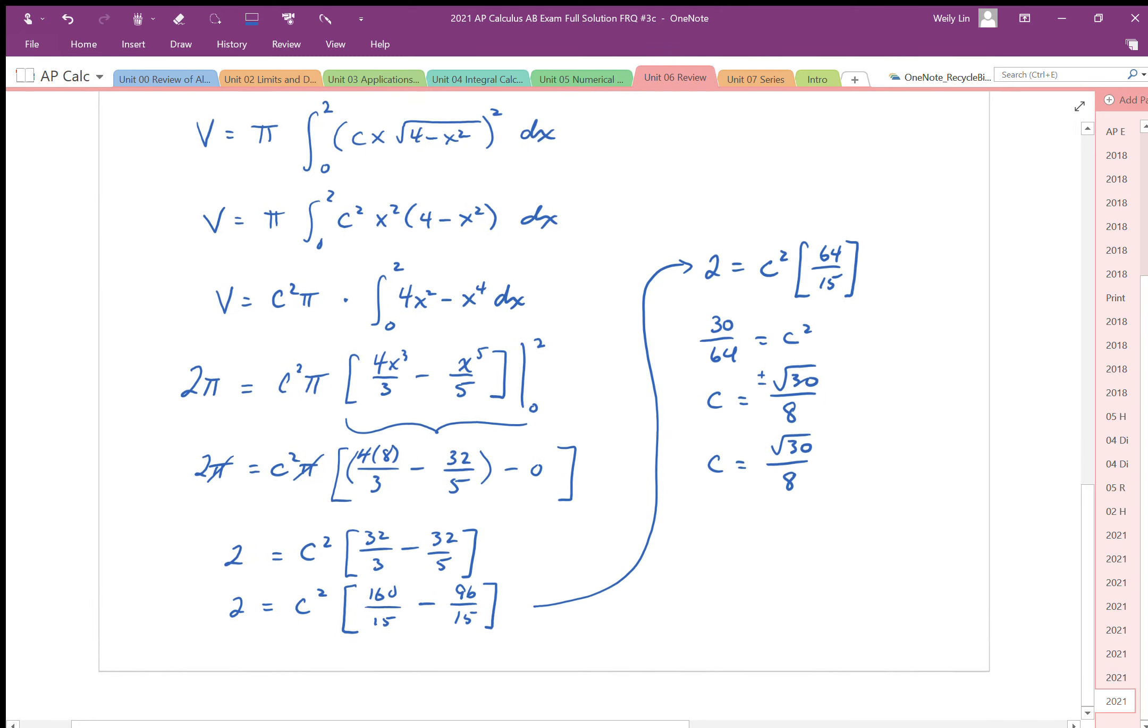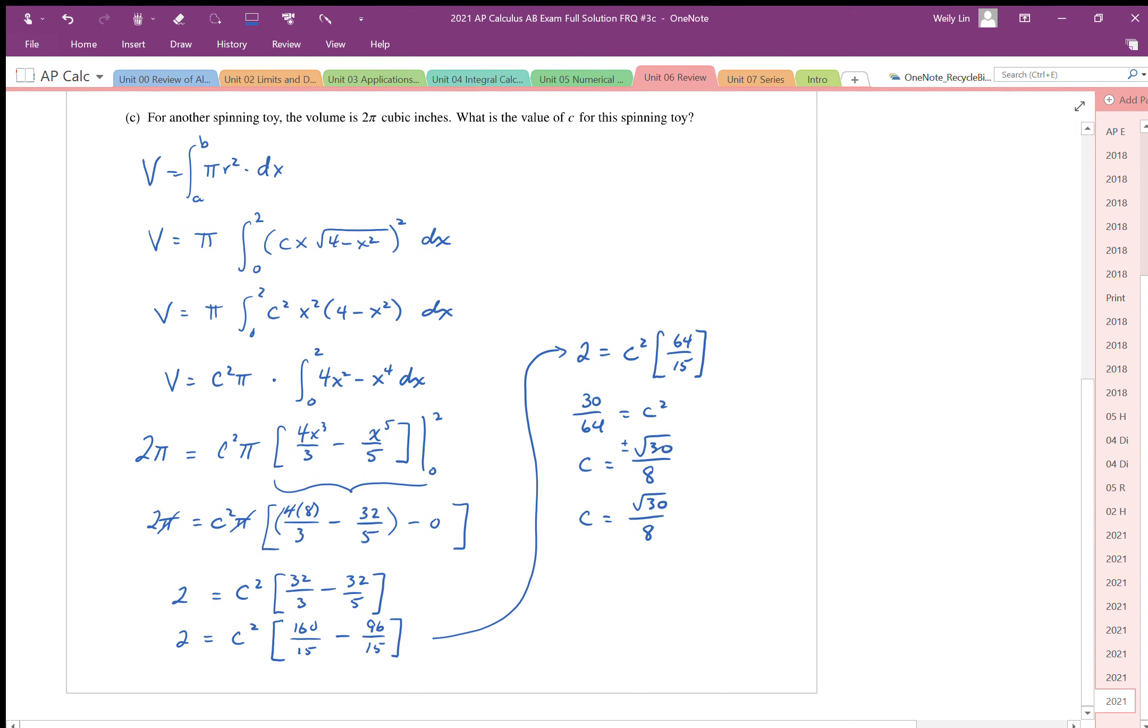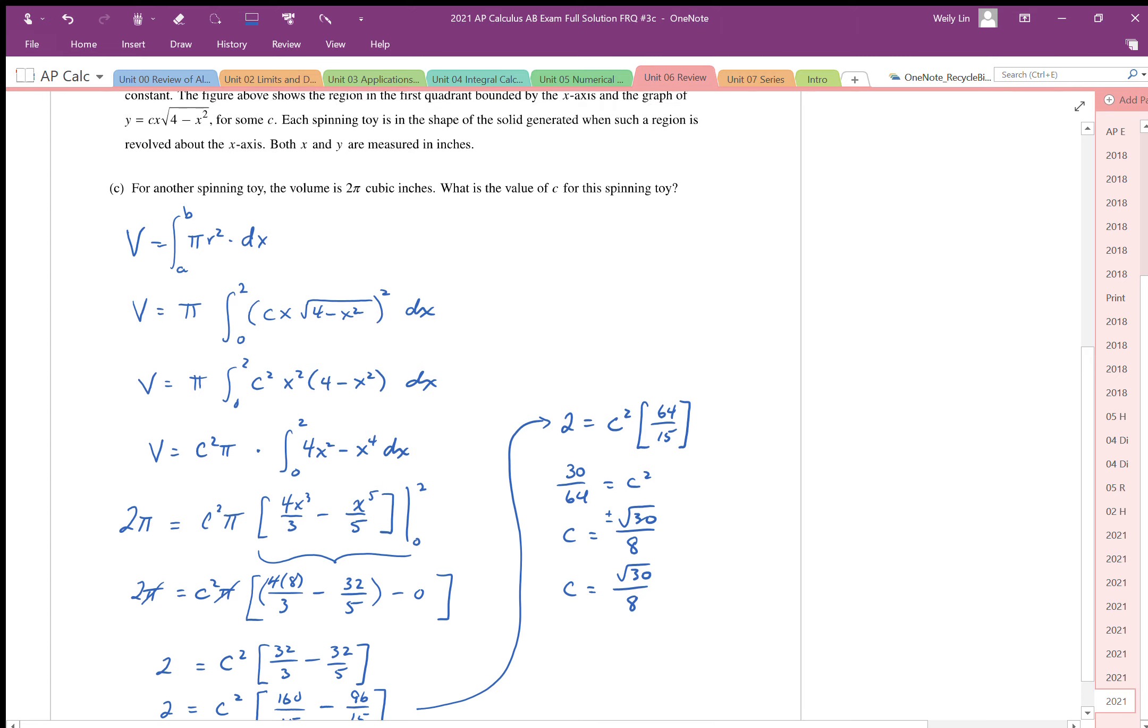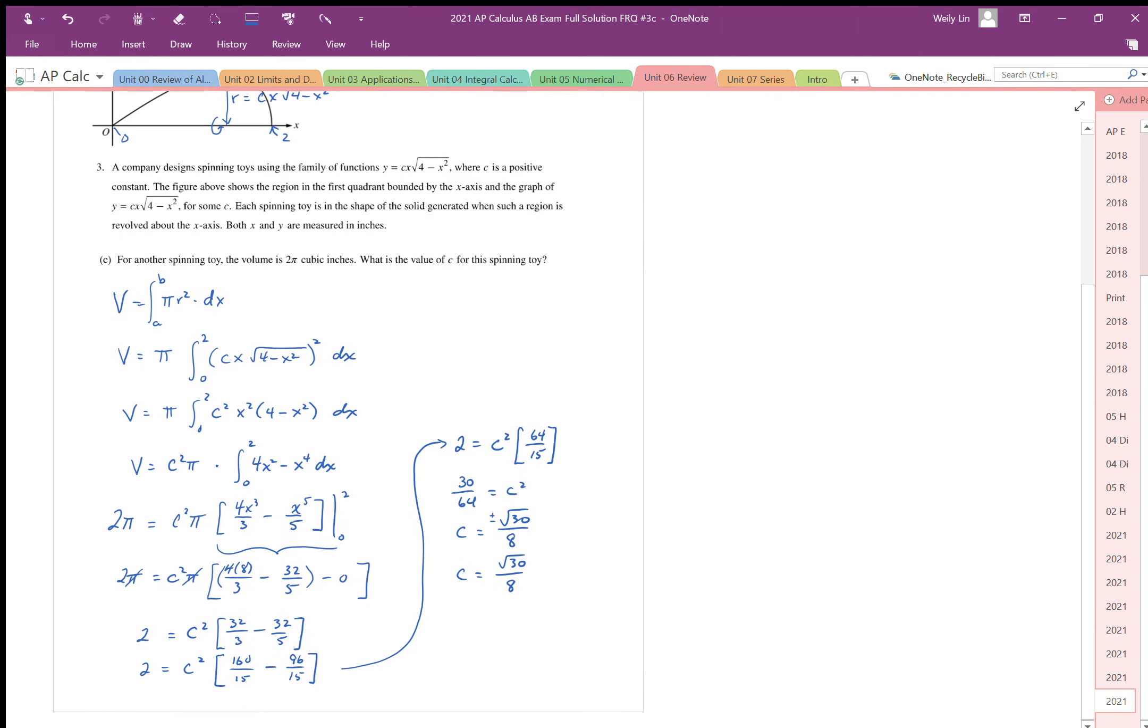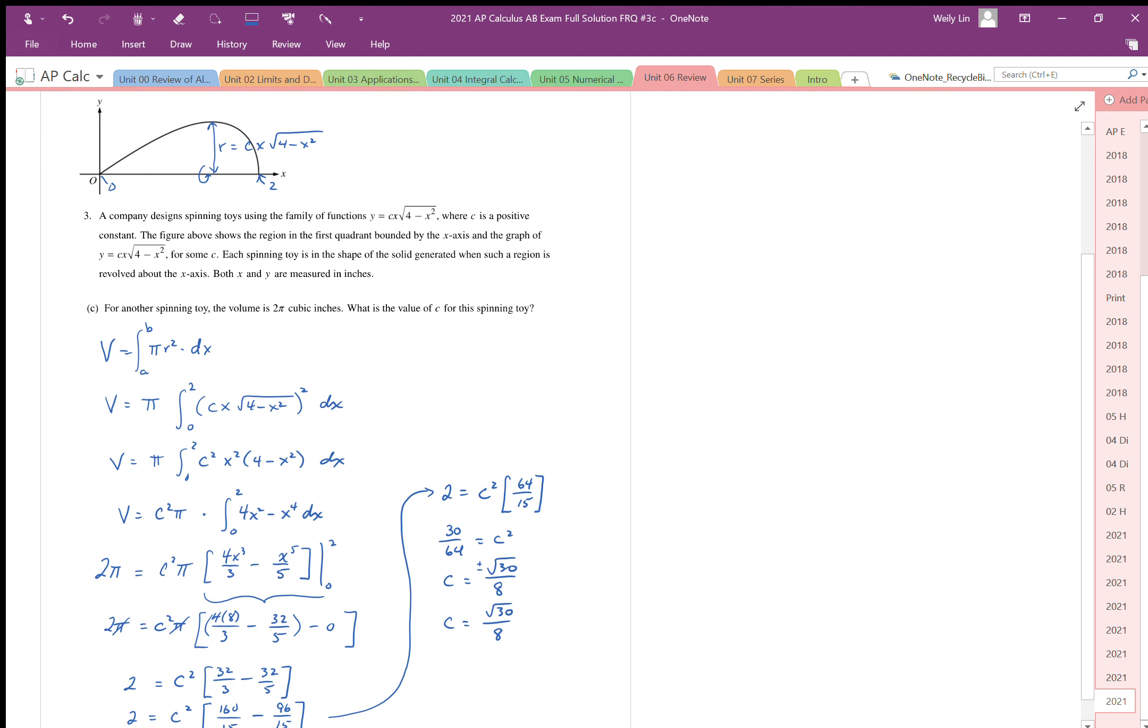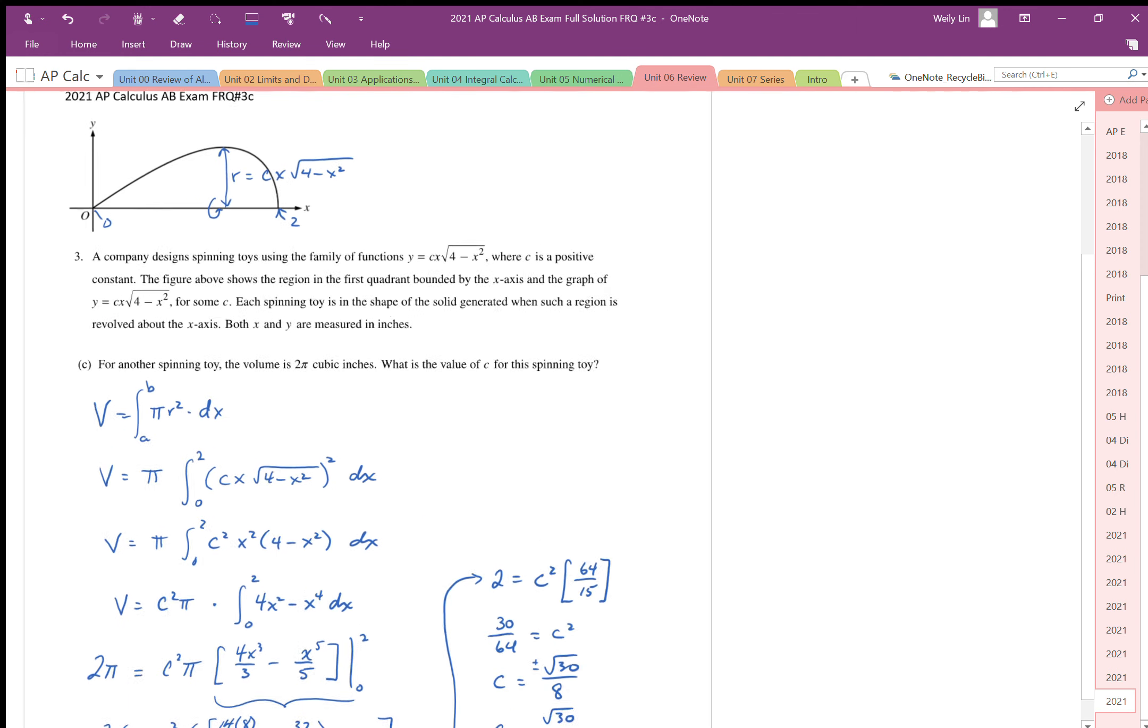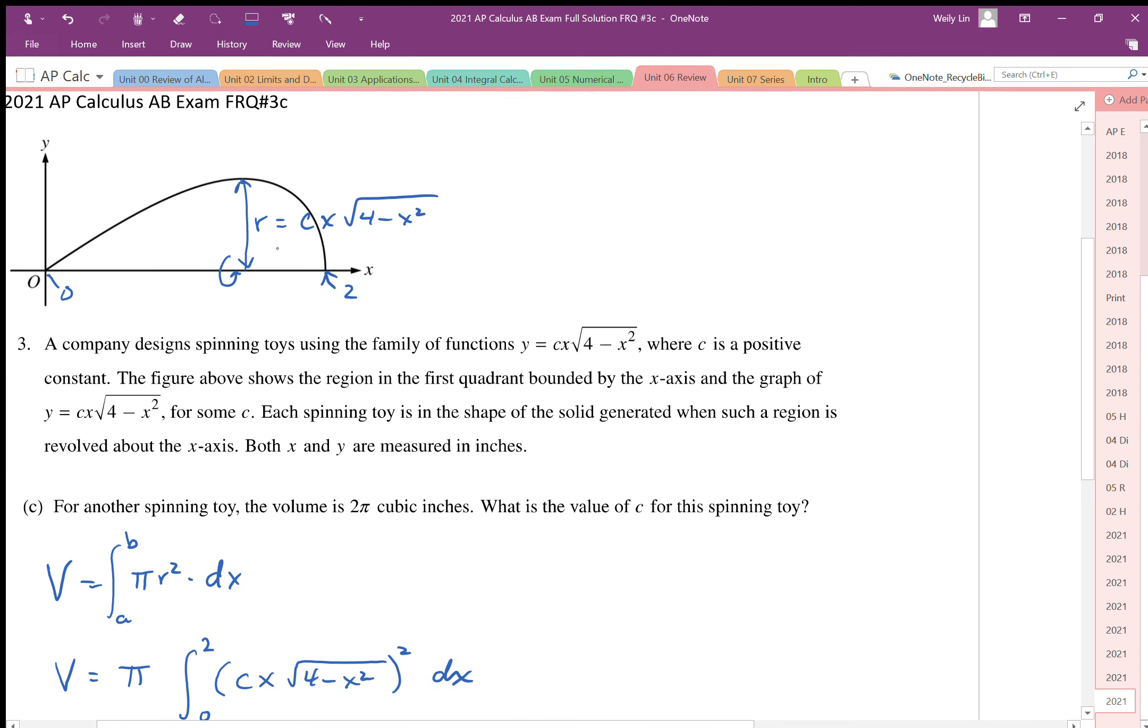Okay, so if I have a c value that vertically expands this expression, it looks like it's going to be a little bit less than 1. So we're going to end up with a c value here that when I spin this object around and generate a volume, that volume will represent that 2π cubic inches.